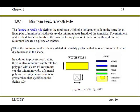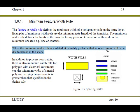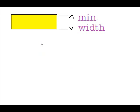When the minimum width rule is violated, there is a high probability of an open circuit. Here we have a polygon which conforms to the minimum width rule. Now, if we decide to draw a polygon that is smaller than the minimum width rule, let's illustrate this.